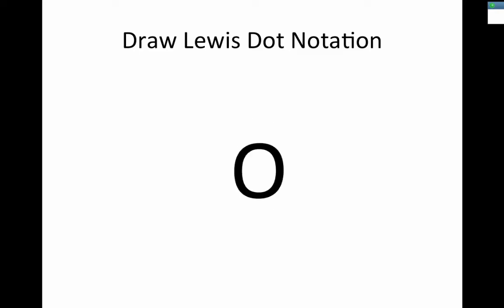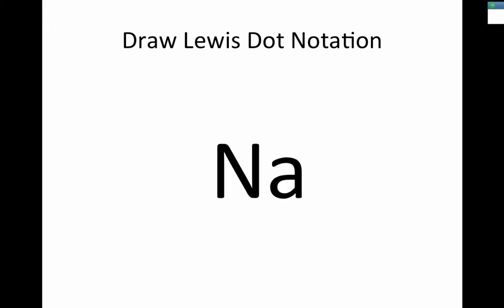Let's try one — oxygen. How many valence electrons does oxygen have? Looking at the periodic table, oxygen has six valence electrons. We draw those six valence electrons as one, two, three, four, five, six. And there are the six valence electrons around oxygen. Now let's look at sodium. Sodium is an alkali metal — it's got one valence electron, so you're only going to see one dot.